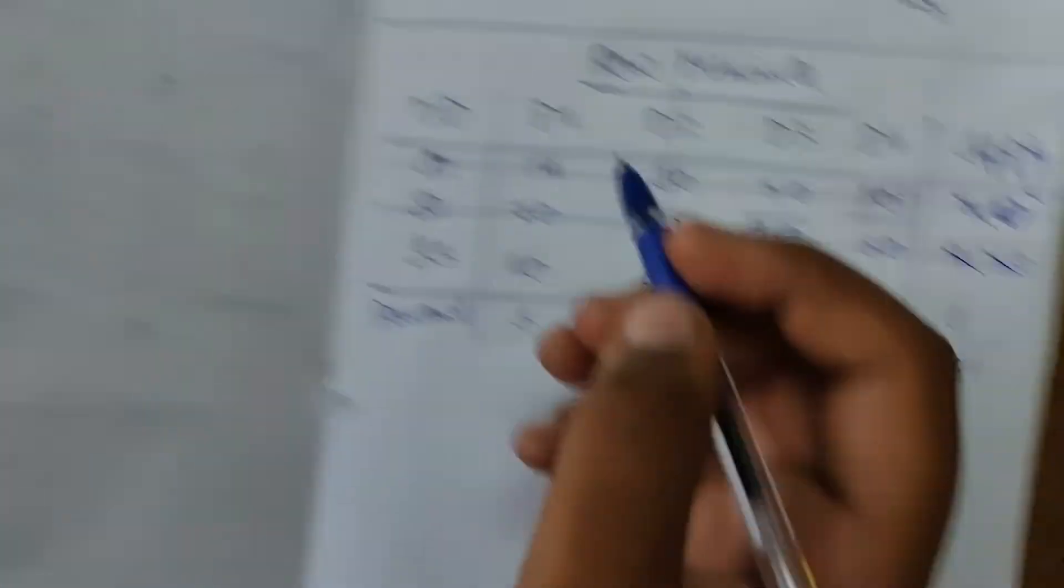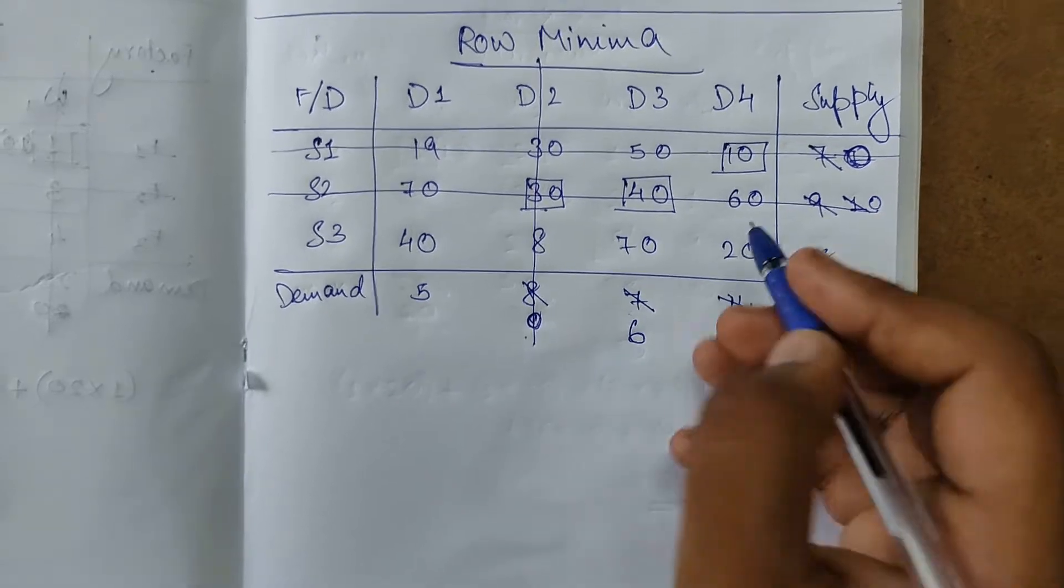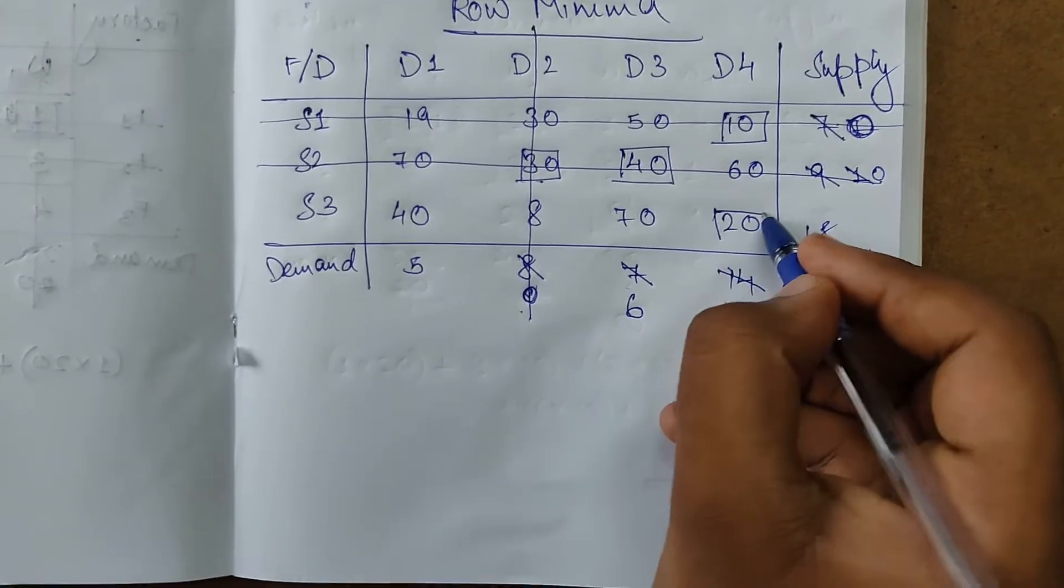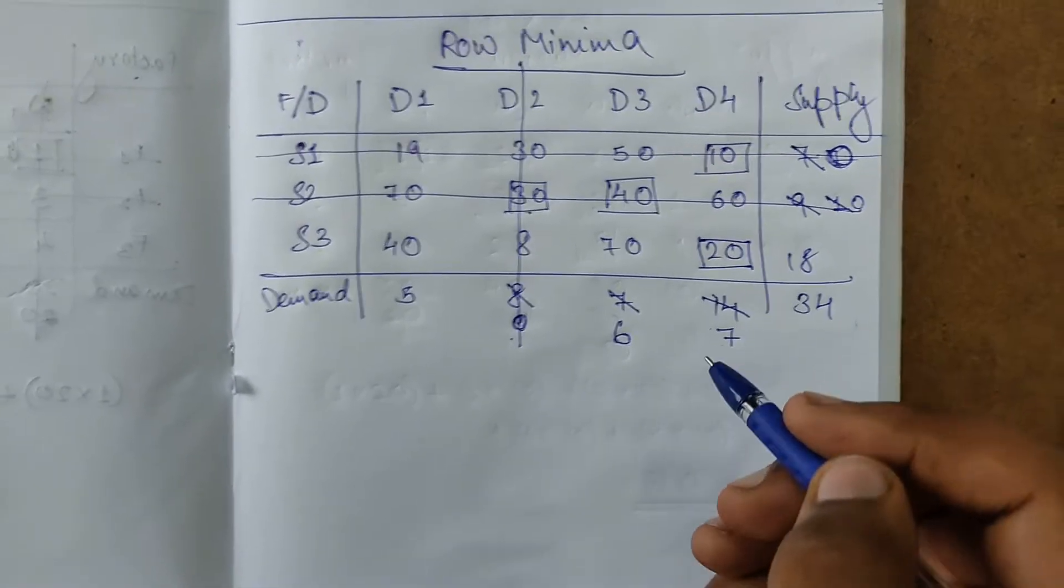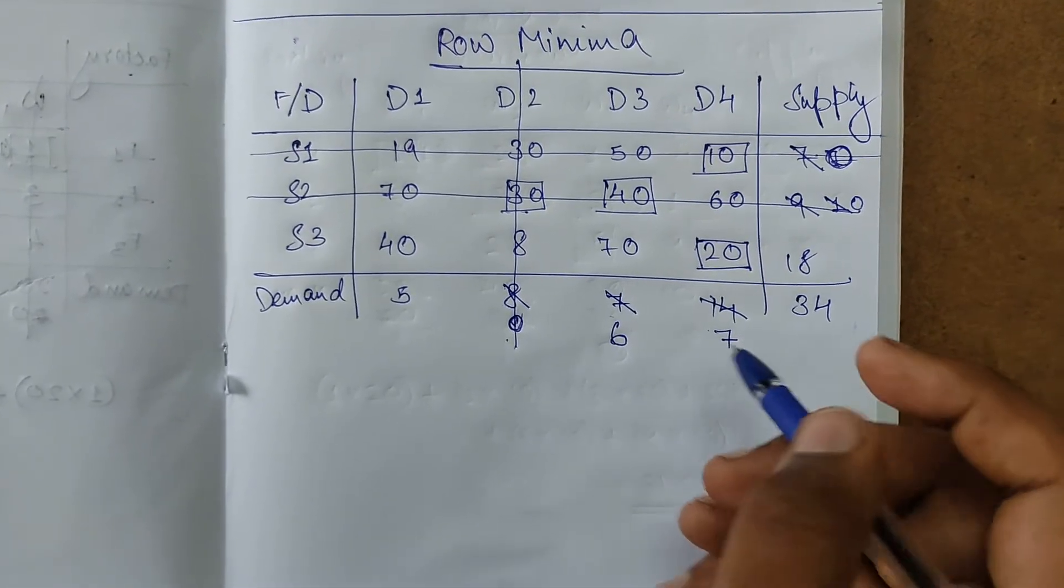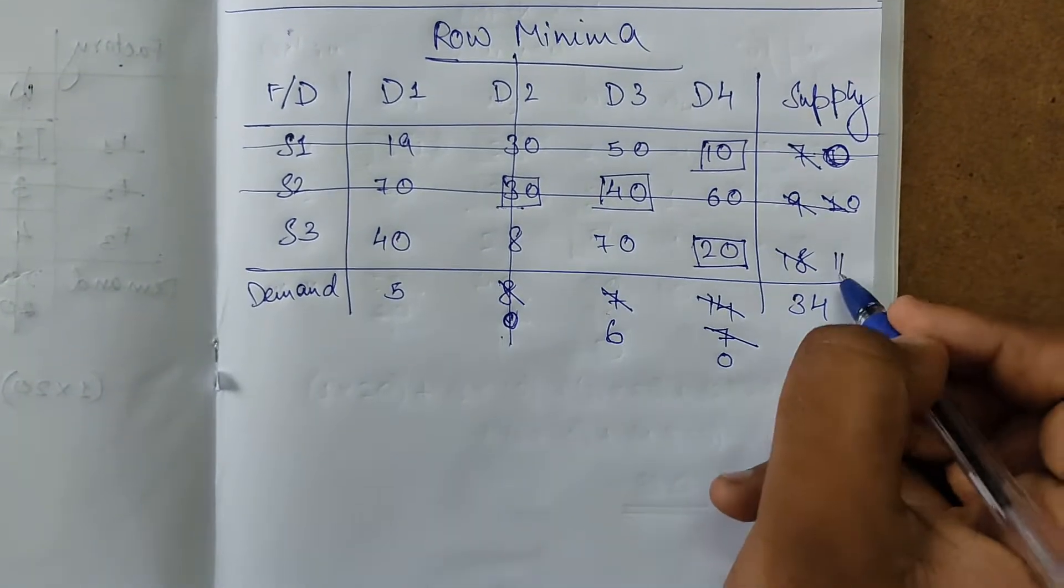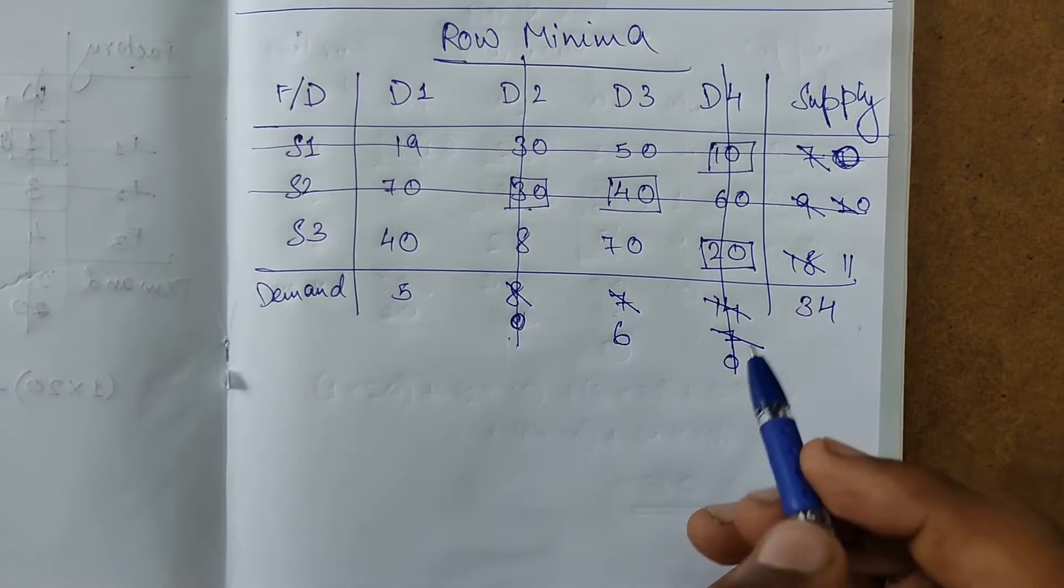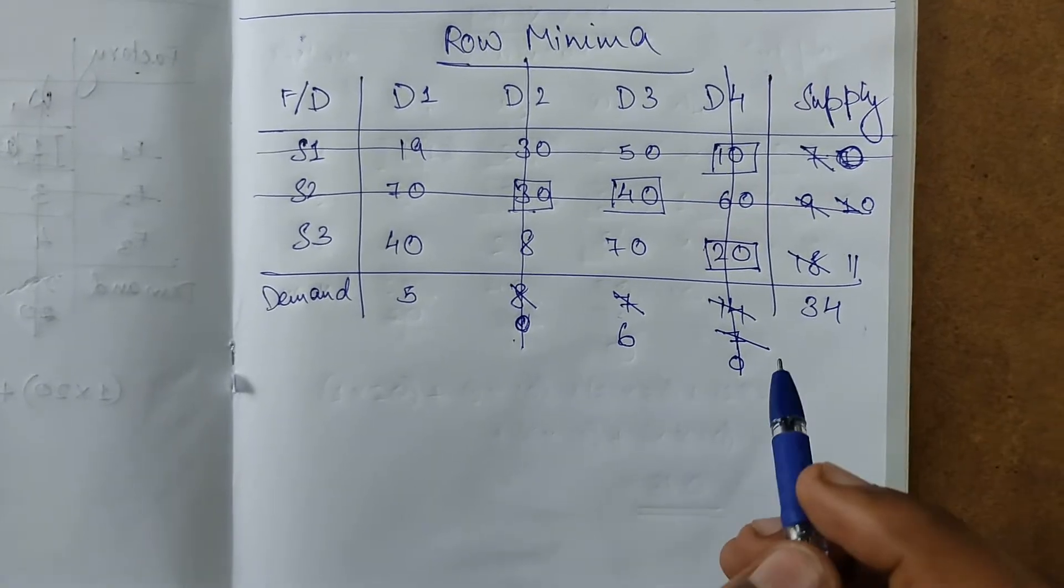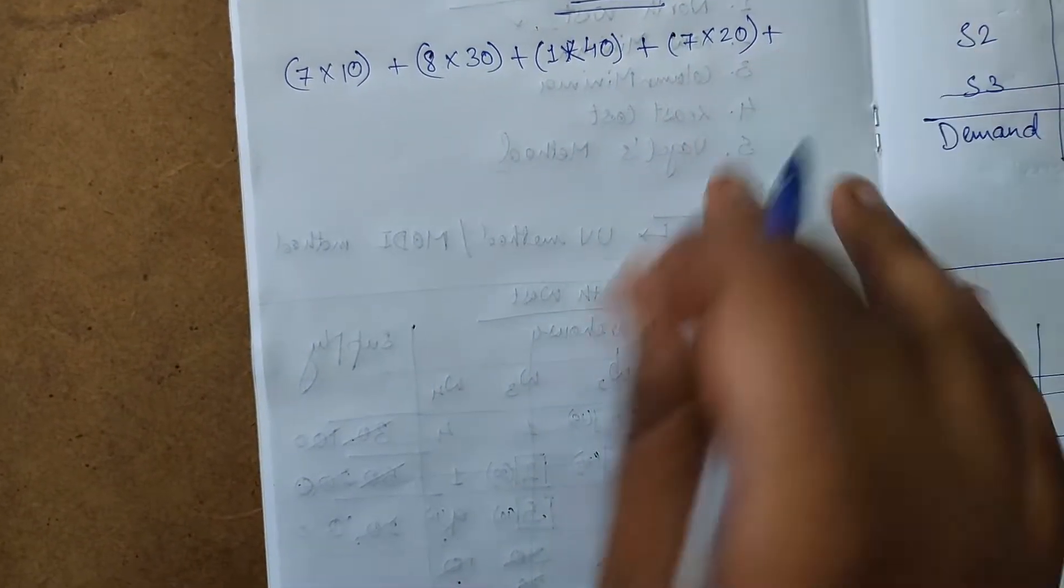Next row, elements are 40, 70, 20. 20 is the least, so we select 20. Demand is 7, supply is 18, so demand is less. 7 minus 7 is 0, 18 minus 7 is 11. Allocation is on this side, strike off this column. Subtracted 7, so add 7 into 20 to the solution.